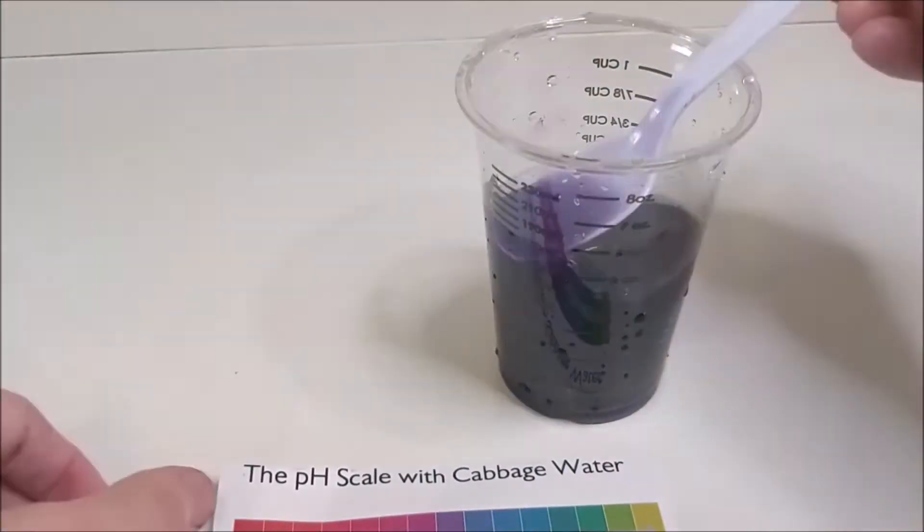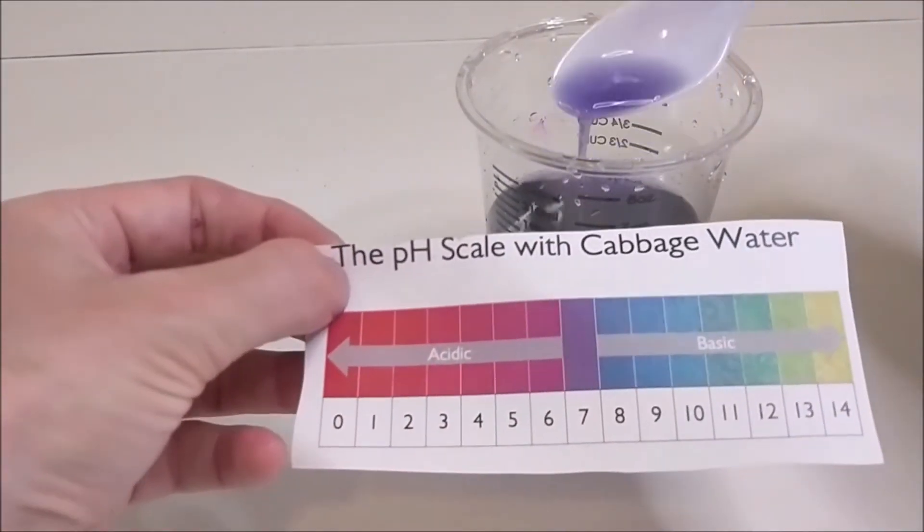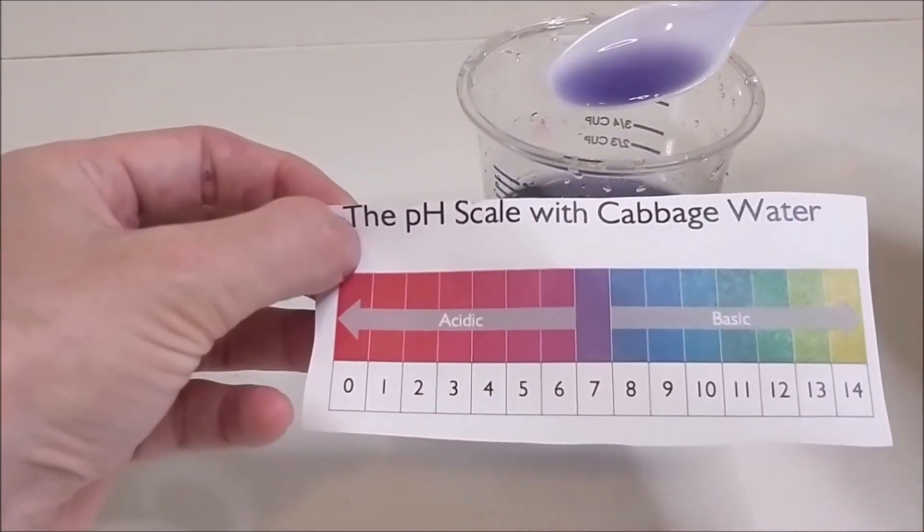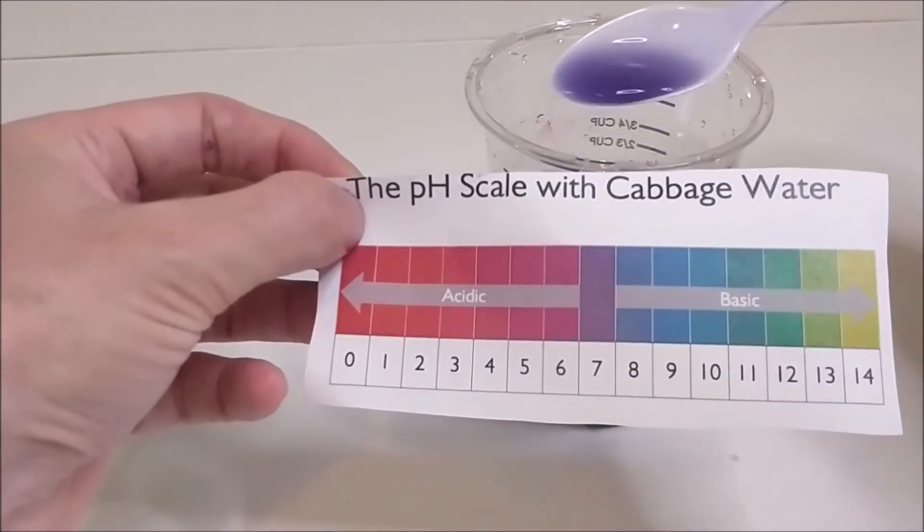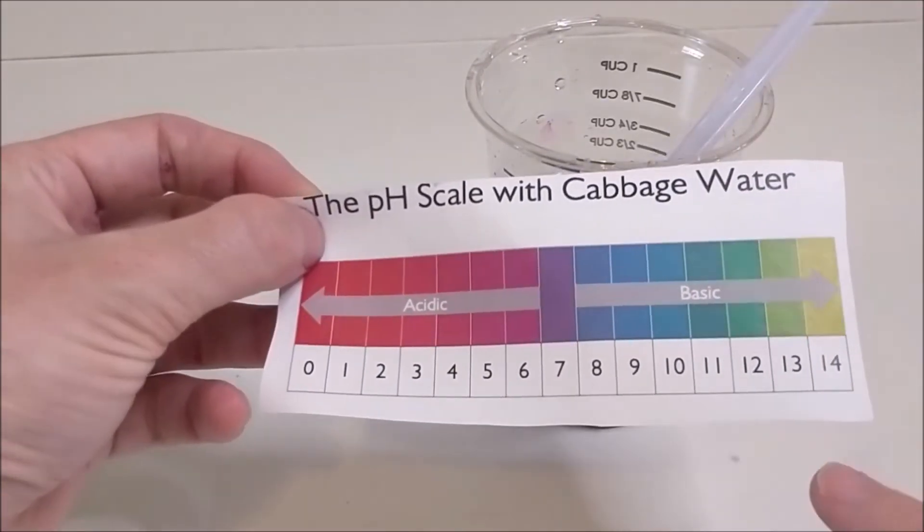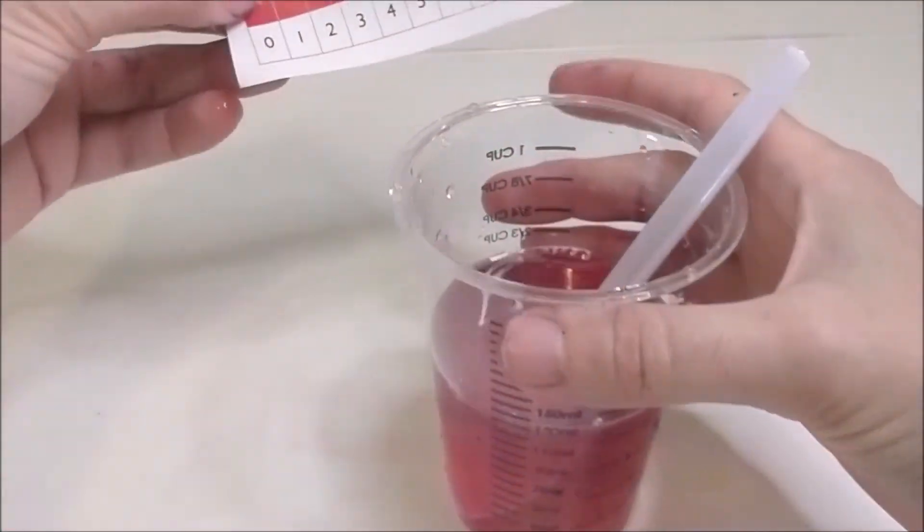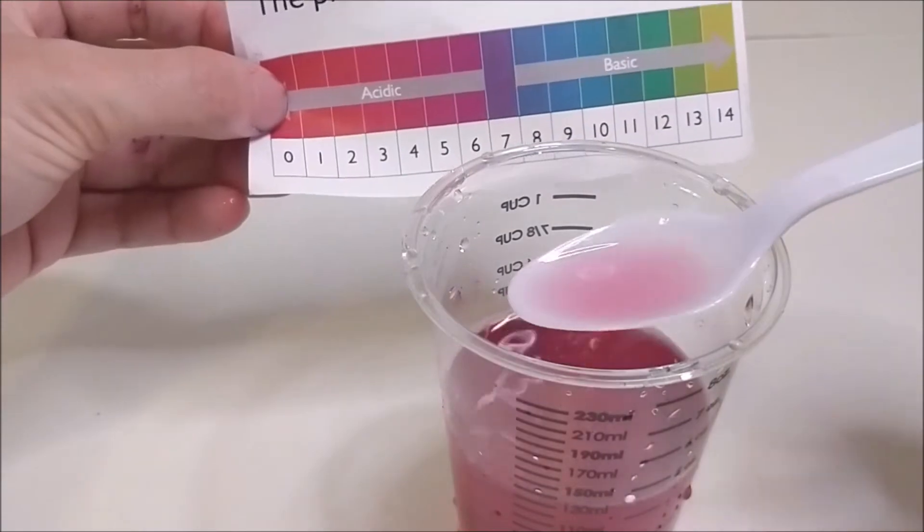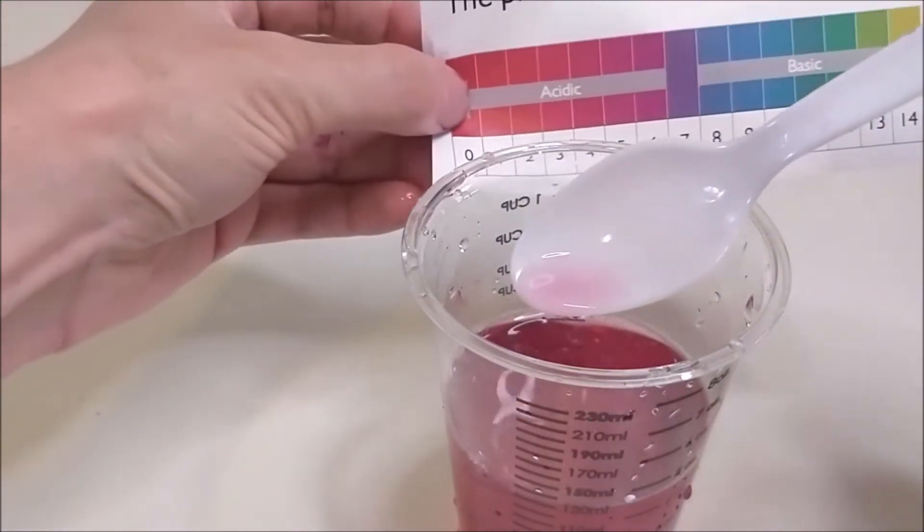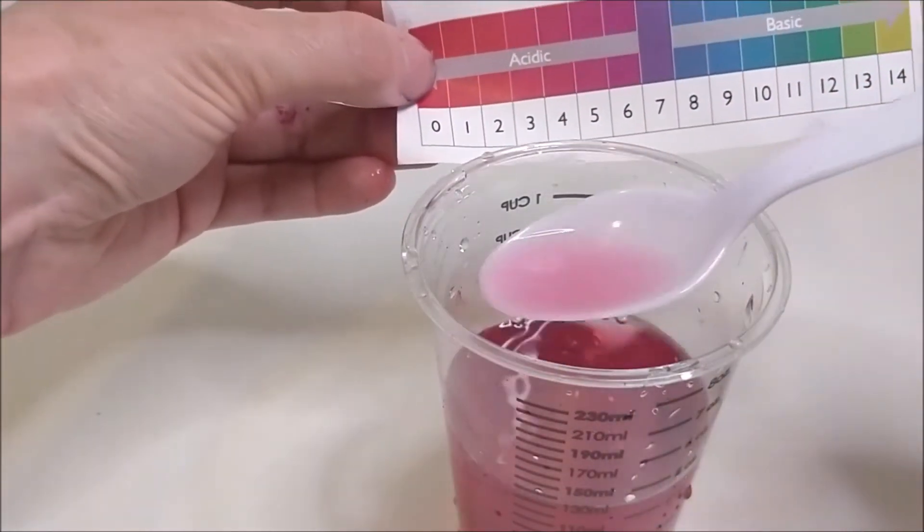Red cabbage contains a natural pH indicator, which means that it changes colors in different pHs, and we can use those color changes to figure out what pH the substance is. So what do the colors mean? Well, that's what your guide is for. And by guide, I mean the paper with the little colored blocks on it. That tells you what pHs the different color changes indicate.